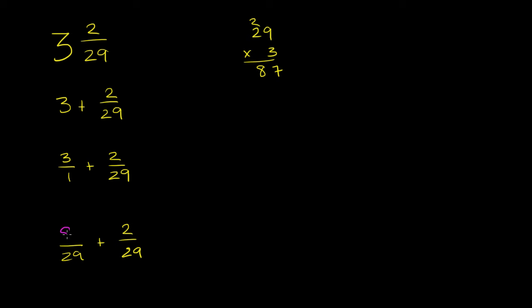If you wanted to know how I did it in my head, I just said 3 times 30 would be 90, and this is going to be 3 less than that because we're doing 29 times 3 instead of 30 times 3. So 3 times 30 is 90, 3 less is 87. That's one way to do it in your head.